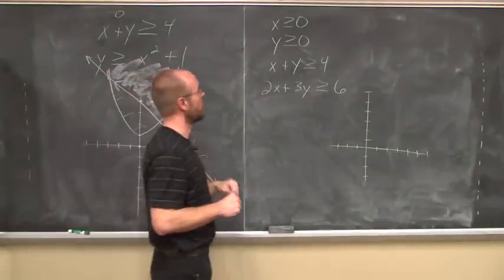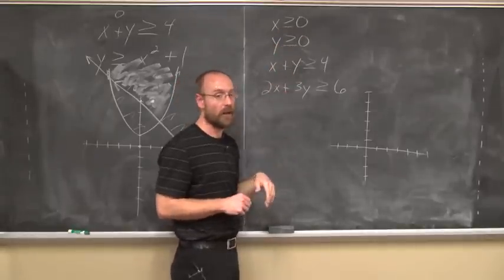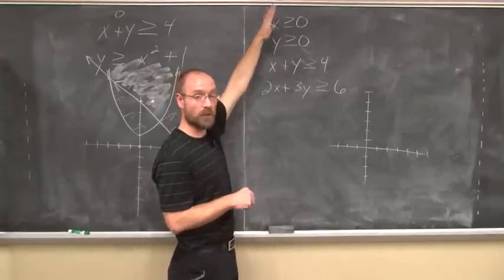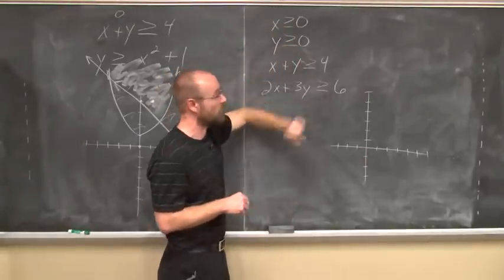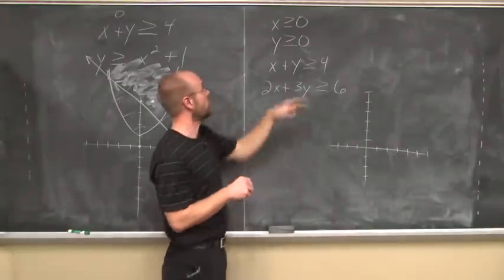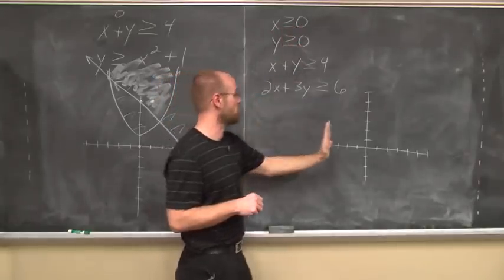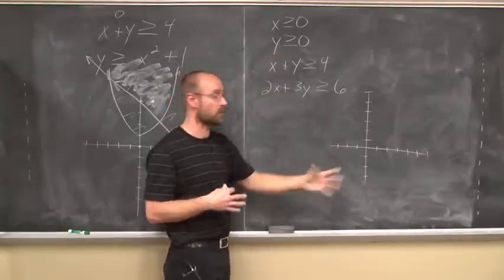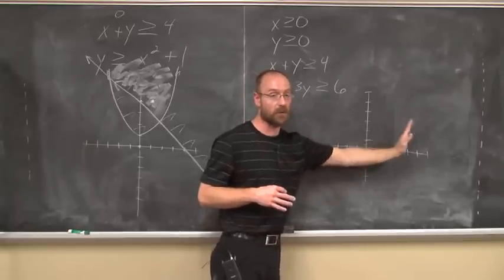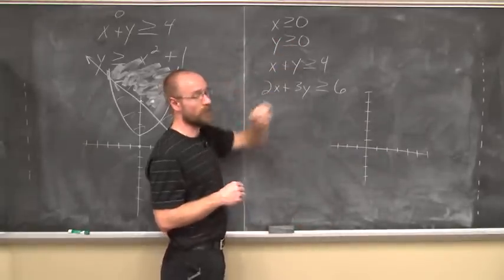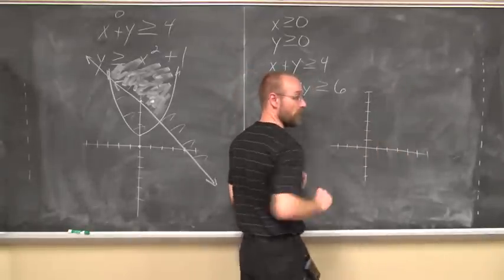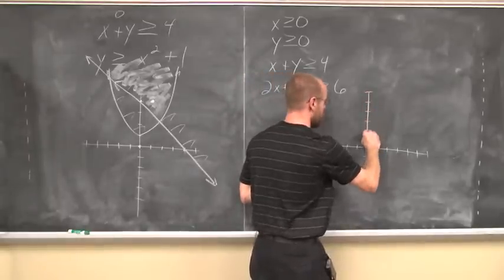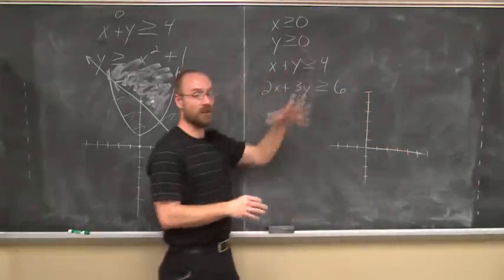Let's look at another example. Here we have four pieces to our system — they all happen to be linear, which doesn't make it too bad. We should always assess these as we go. We're using solid lines everywhere. x greater than or equal to 0 means I'm to the right of the y-axis. And y greater than or equal to 0 means I'm above the x-axis. That means we're limited to the first quadrant — anything we shade has to be within the first quadrant. That narrows it down considerably.